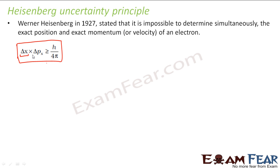Where delta x is the uncertainty in position and delta p is the uncertainty in momentum. If you want to learn Heisenberg's uncertainty principle in a little more detail, you can refer to the lesson on dual nature of radiation and matter.